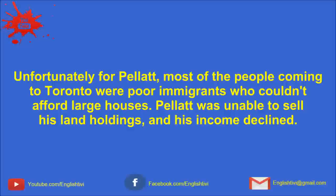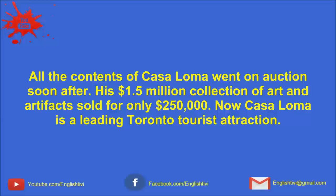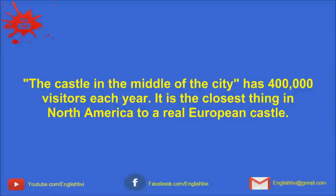Unfortunately for Pellett, most of the people coming to Toronto were poor immigrants who couldn't afford large houses. Pellett was unable to sell his land holdings, and his income declined. In 1924, Pellett turned Casa Loma over to the city of Toronto because he could not pay his property tax. All the contents of Casa Loma went on auction soon after. His $1.5 million collection of art and artifacts sold for only $250,000. Now, Casa Loma is a leading Toronto tourist attraction.